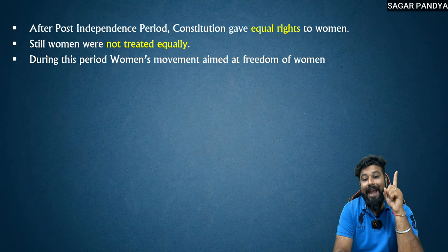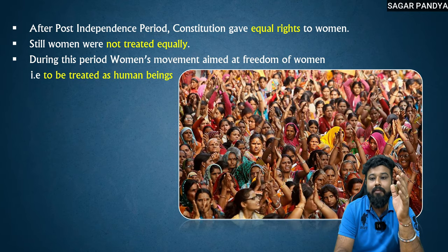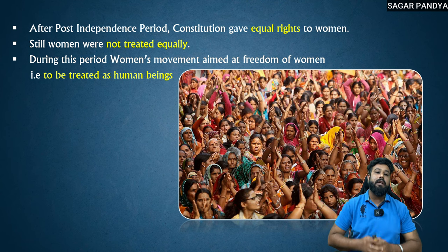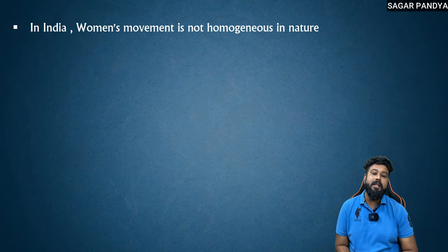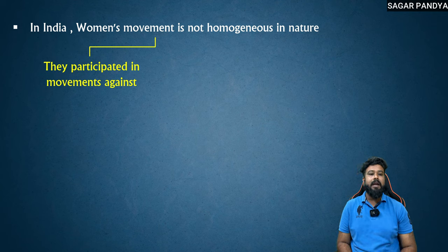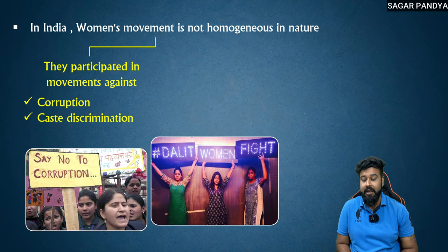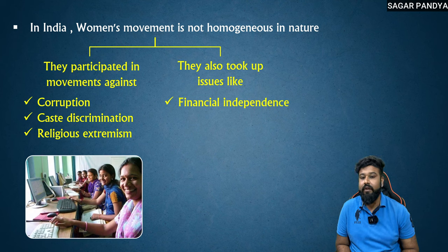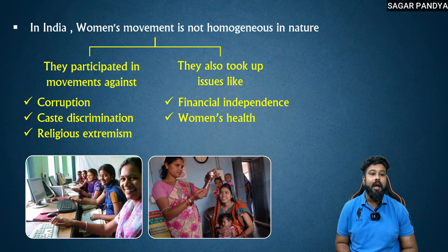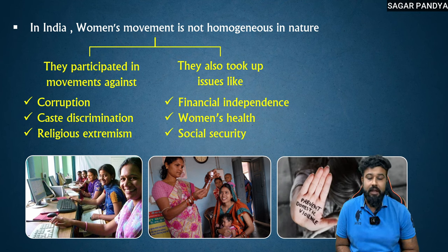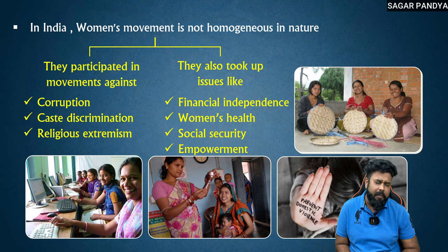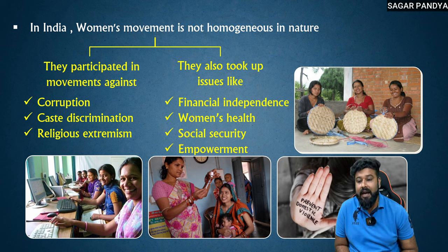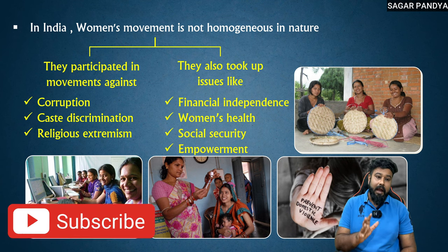So during this period, the women's movement aimed at freedom of women and different things — women should be treated as equal human beings. In India, the women's movement is not homogeneous in nature — meaning it is not the same everywhere. They participated in movements against corruption, against caste discrimination, against religious extremism. They also took up issues like financial independence, women's health, social security, and women's empowerment. So corruption, caste discrimination, and women's health are important topics.